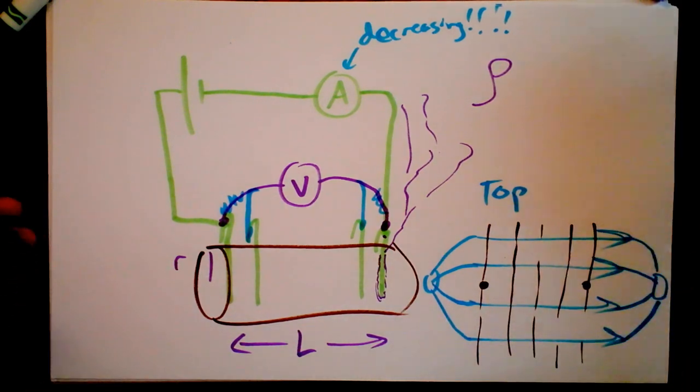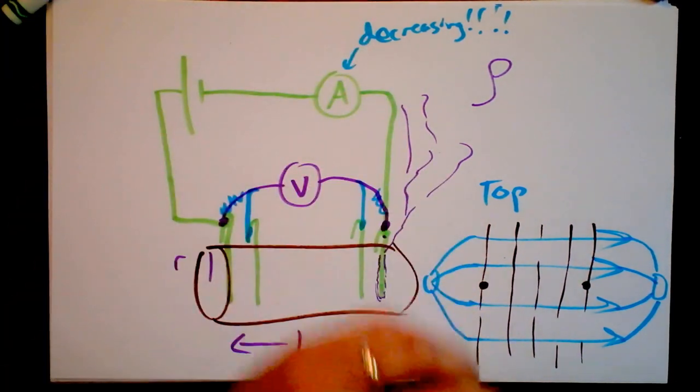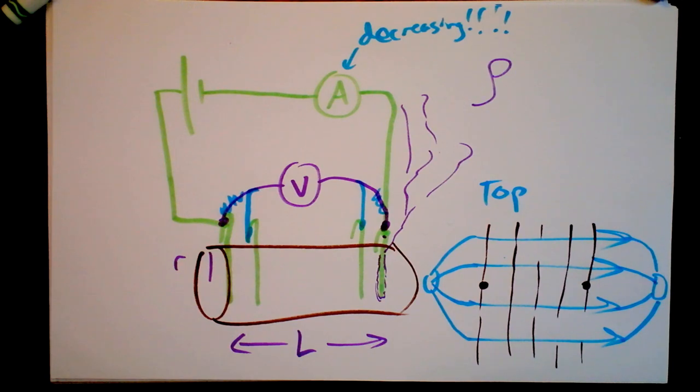So anytime you are measuring the resistance of something that has very little resistance, you must use the four probe resistance measurement. It's also called Kelvin measurement and Wikipedia calls it four terminal sensing. Now, isn't that nice? All right. So now you know about it and you should also do it.